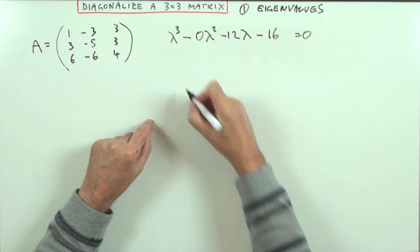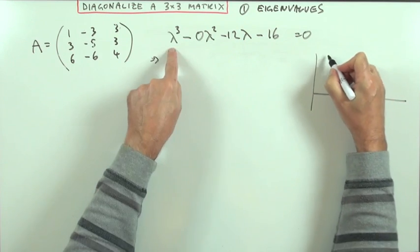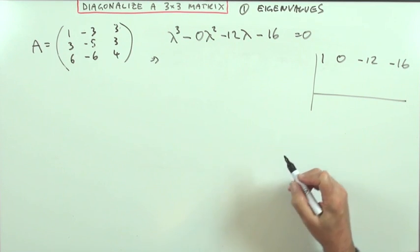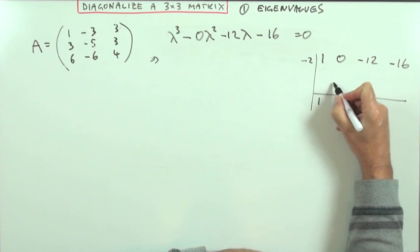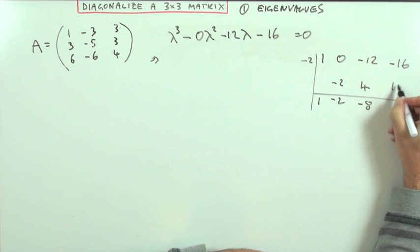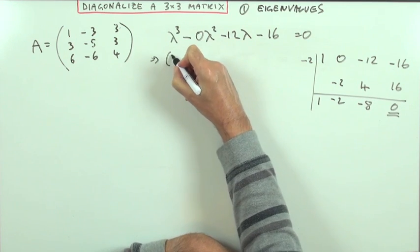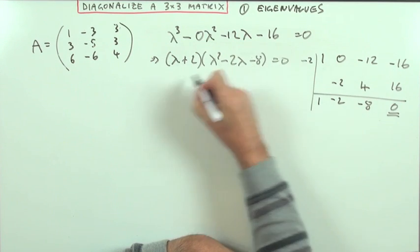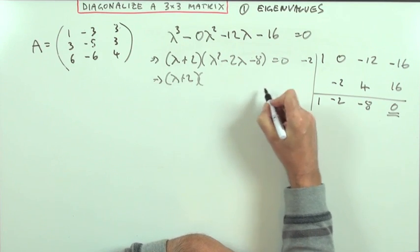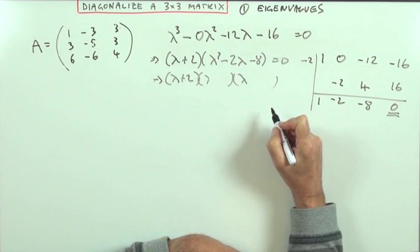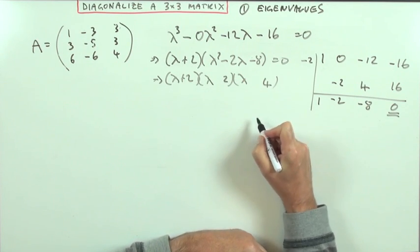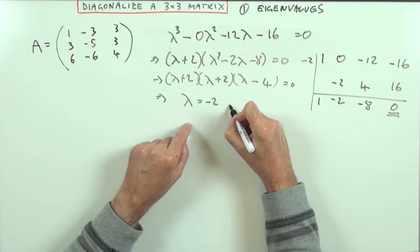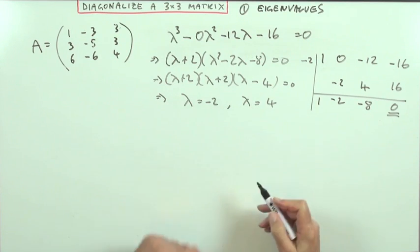To factorise, I'll use synthetic division with coefficients 1, 0, negative 12, negative 16. Trying λ = negative 2: that gives a remainder of 0, so we get (λ + 2)(λ² − 2λ − 8) = 0, which factors as (λ + 2)(λ − 4)(λ + 2) = 0. So we have a repeated eigenvalue of λ = negative 2, and a single eigenvalue of λ = 4.